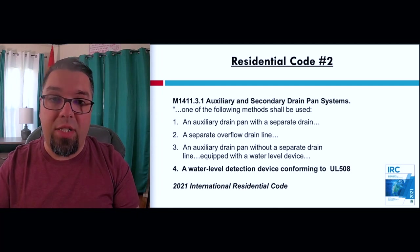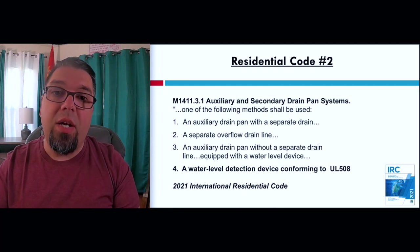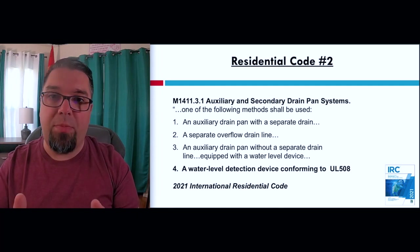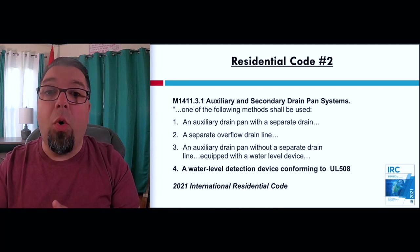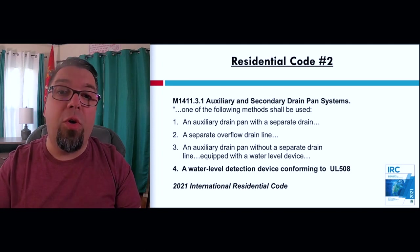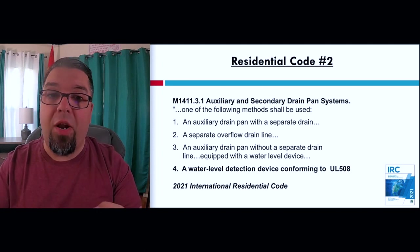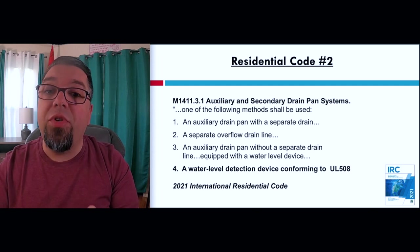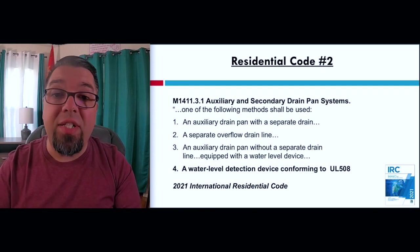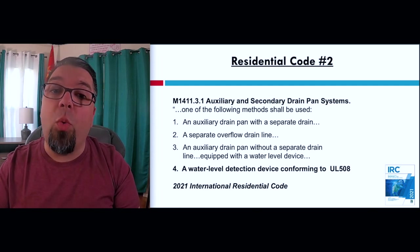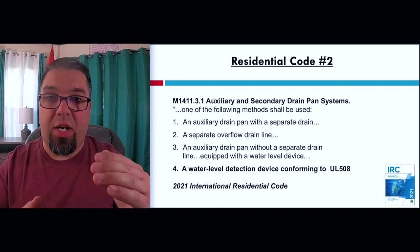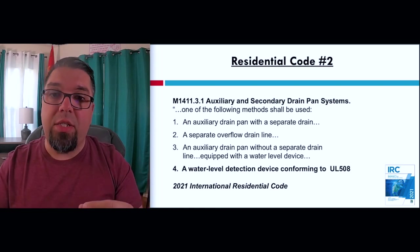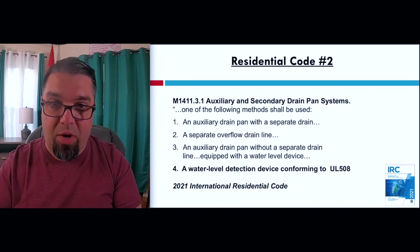Or you need to have a separate overflow drain line — you could pipe that off the unit if you can't get a drain pan in. An auxiliary drain pan without a separate drain line needs to be equipped with a water level device. All three of these options are talking about overflow drains or secondary drain pans with ways to shut the system off.